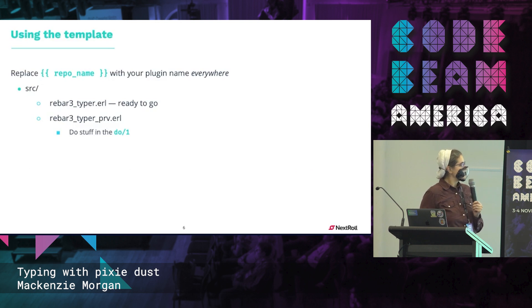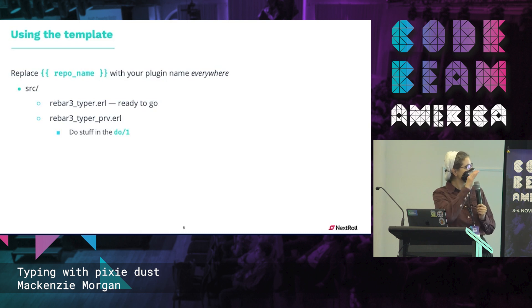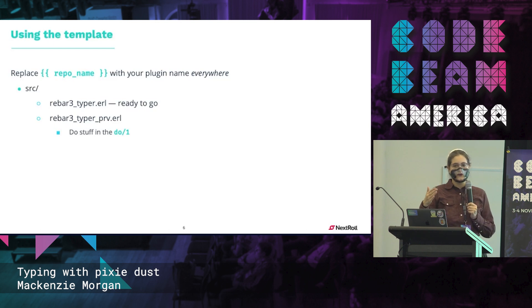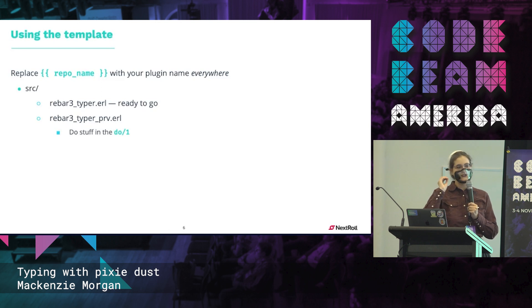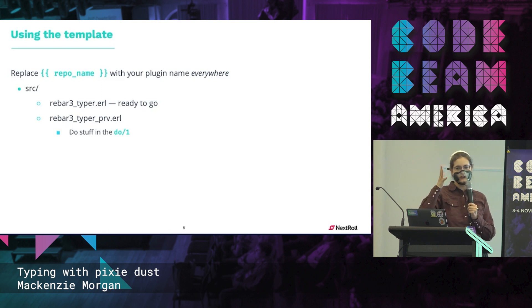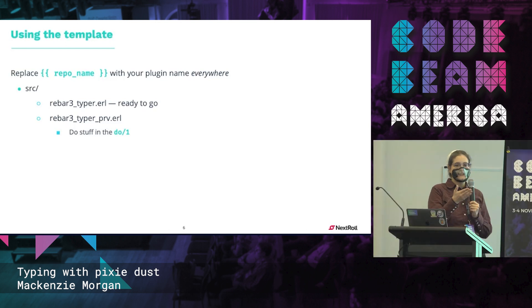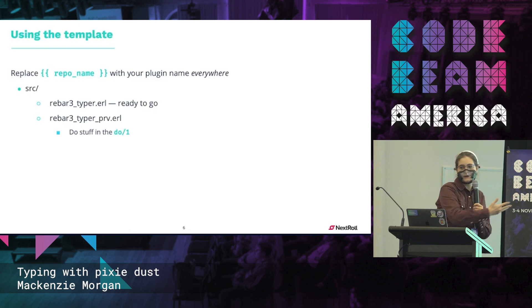You can pretty much ignore the rebar3 .app.src file — that one's good to go. The PRV file, the private one, is where you'll put all of your code that does stuff. Your main equivalent is the do function.